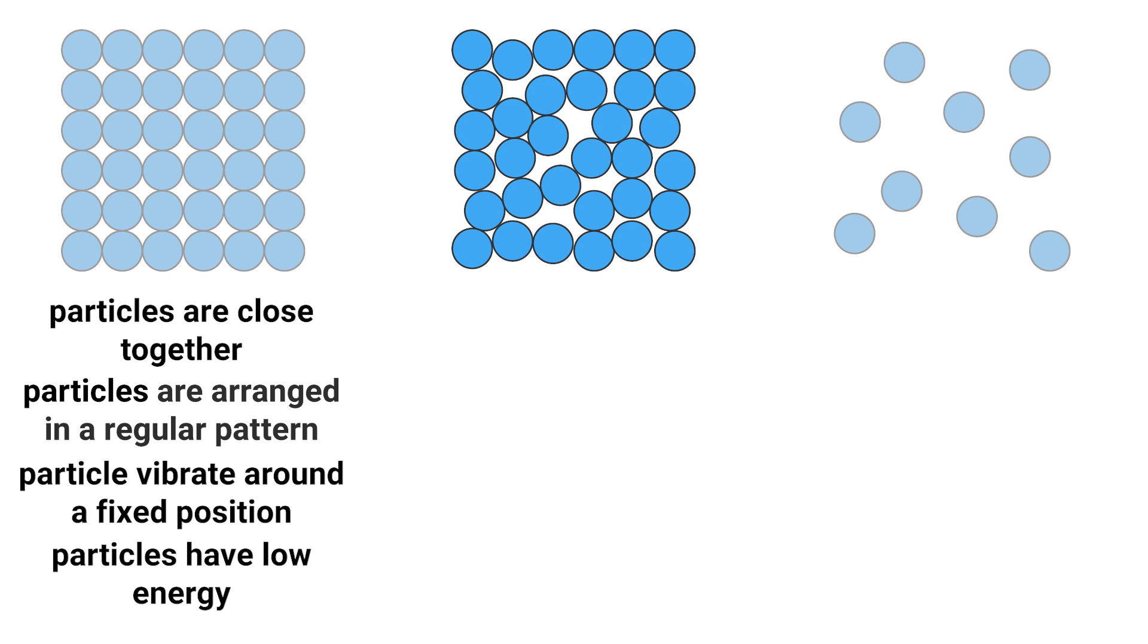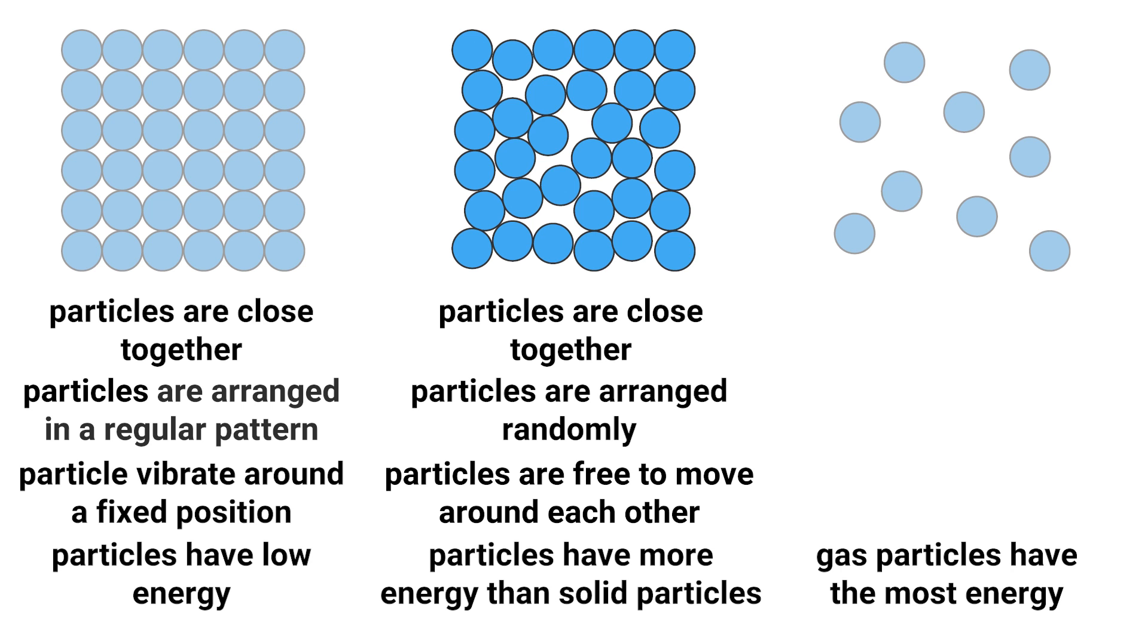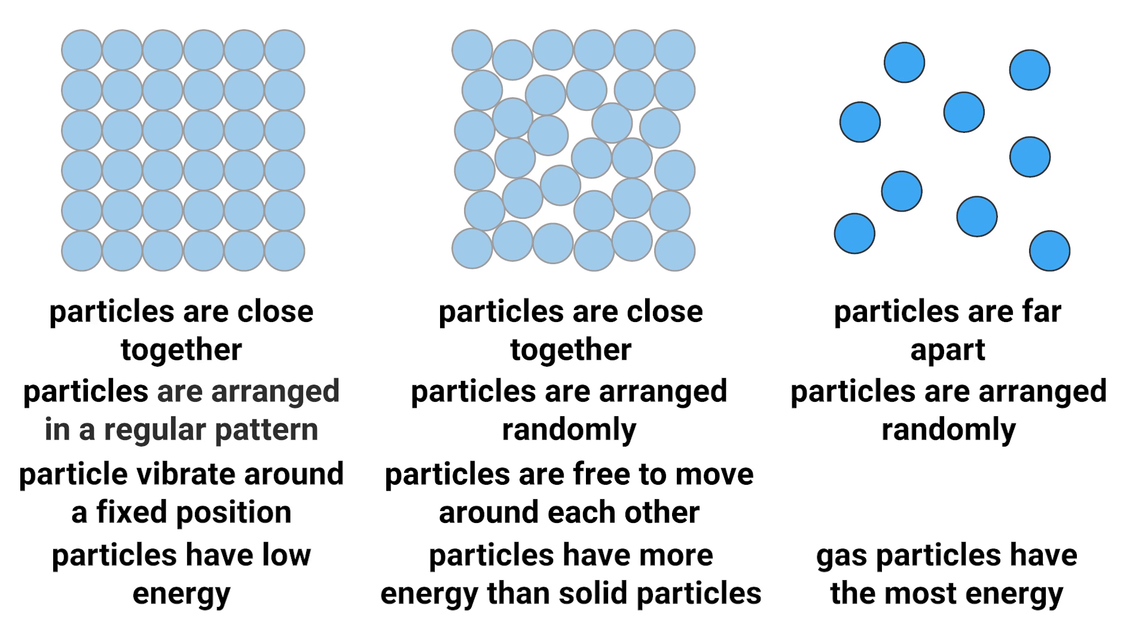In a liquid the particles are also close but they're not as close as they are in a solid. The particles are now randomly arranged and they're free to move around each other. The particles have more energy than solids. However, gases have the most amount of energy. In a gas particles are very far apart and the particles are randomly arranged.